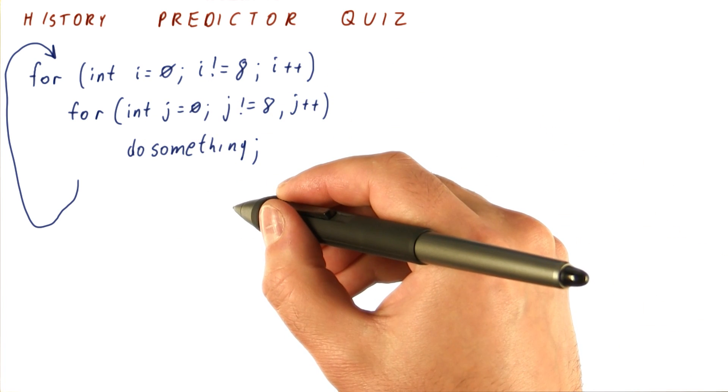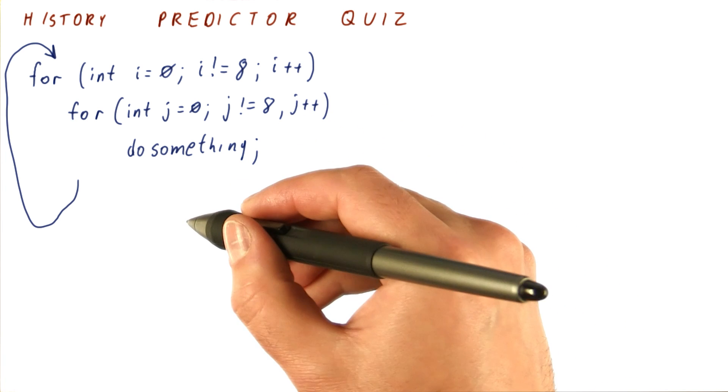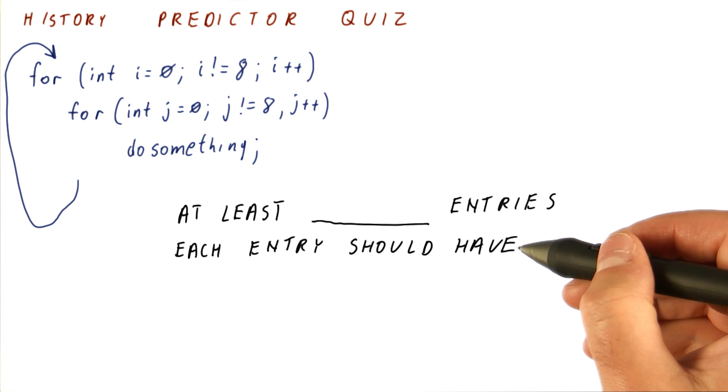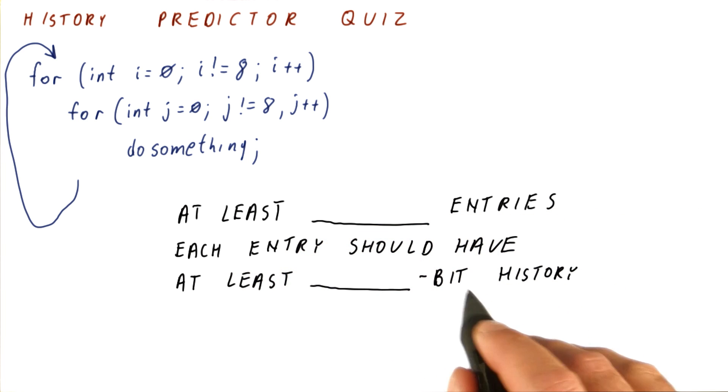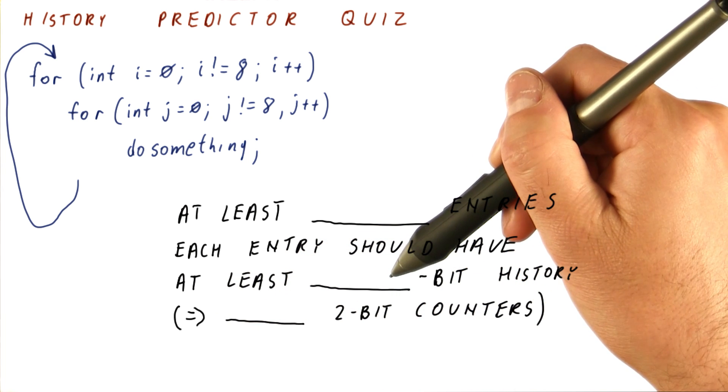If we are building a history-based predictor that should do well on this code, it needs at least how many entries. And each of these entries should have how many bits of history and how many two-bit counters do we need per entry as a result of this history.